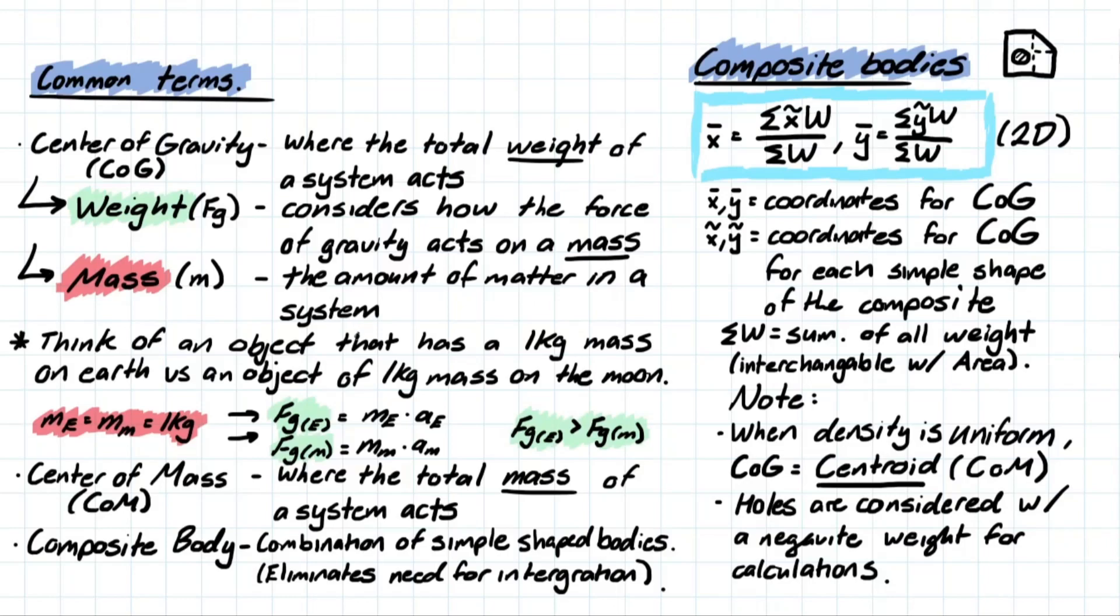The way I wanted to explain this was pretty much just comparing an object. Let's say we had a 1 kilogram mass on Earth versus a 1 kilogram mass on the Moon. So obviously the mass on Earth and the mass on the Moon will be the same, 1 kilogram. But if we're looking at the force of gravity, we know that gravity on the Moon is different from gravity on Earth. On Earth, it would be 9.81 meters per second squared. And on the Moon, it's approximately 1.62 meters per second squared. So looking at their weight or their force of gravity, the force of gravity on Earth would be stronger than the force of gravity on the Moon.